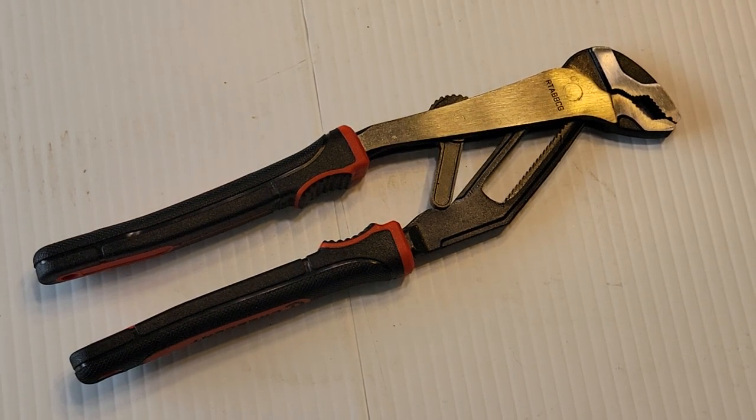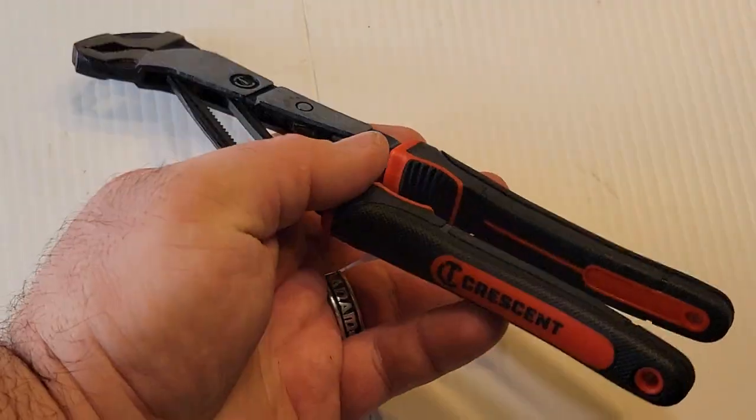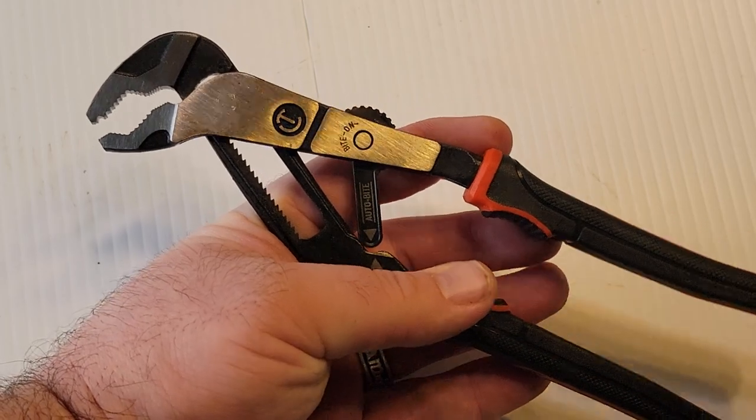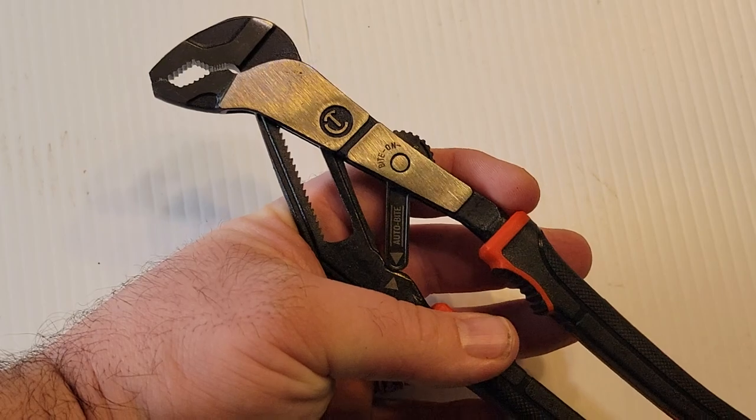Alright guys, here's one of the worst tools I bought in a long time. Crescent Auto Bite - these are a channel lock style pliers designed to self-adjust.